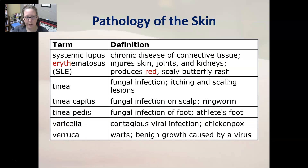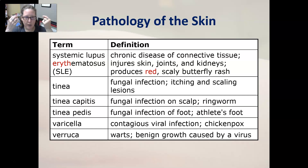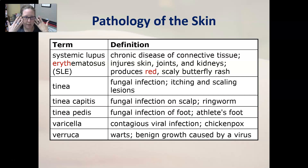Systemic lupus erythematosus is an autoimmune disease and a chronic disease of connective tissue, where your immune system attacks the connective tissue. It injures the skin, joints, and kidneys, and produces a red scaly butterfly rash across the nose and cheeks—like a carnival wolf mask that goes across the eyes.